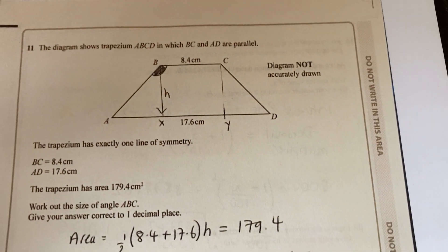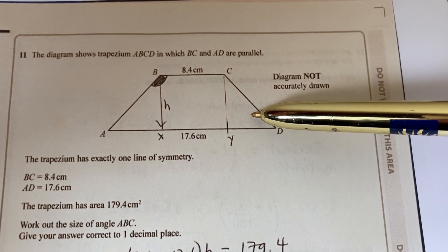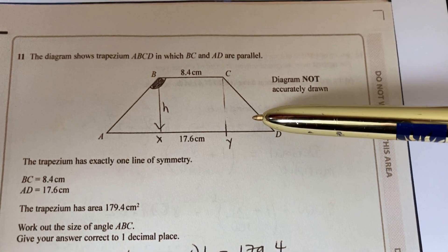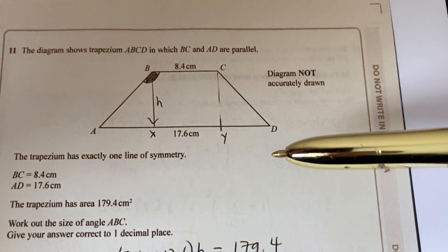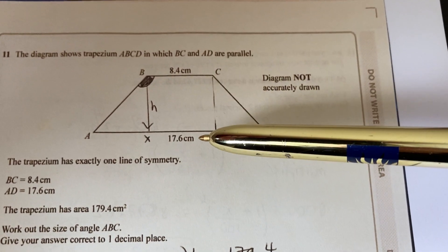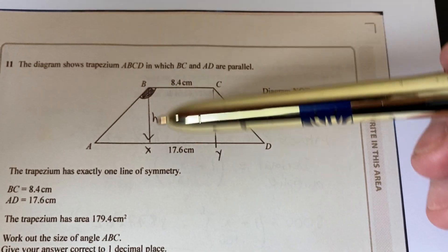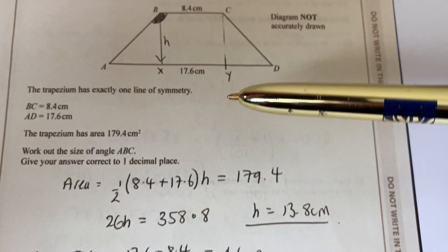Okay, question number 11 involves the area of a trapezium. The formula is on the front formula page: area equals a half brackets A plus B close brackets H, A and B being the parallel sides, 8.4 and 17.6. We don't know the H here so we're going to use that in the formula.